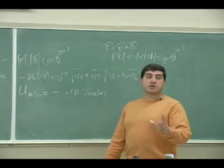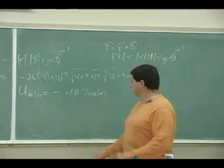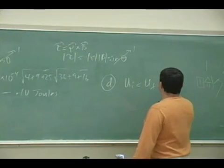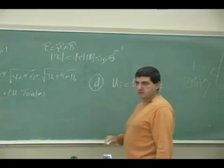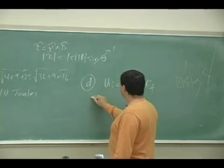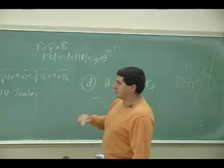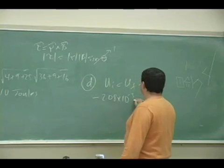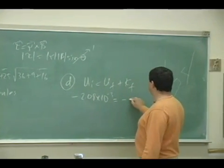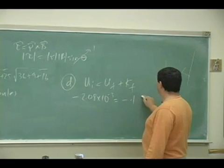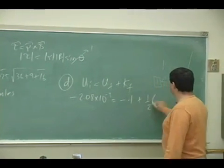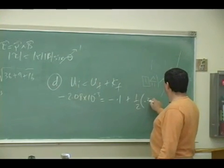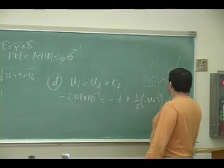Okay, so then the final velocity is going to be u initial is u final plus kinetic final, conservation of energy. So negative, the initial potential energy is 2.08 times 10 to the minus 3, is equal to u final, negative 0.1 joules, plus half times the mass, 300 and, what was it, 345 grams, times v final squared.